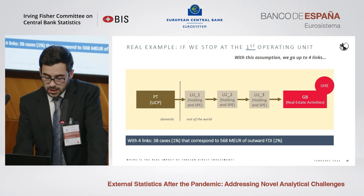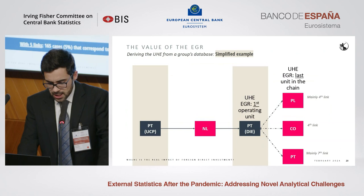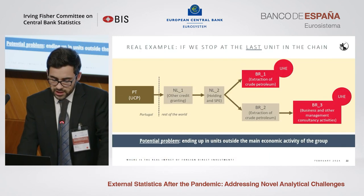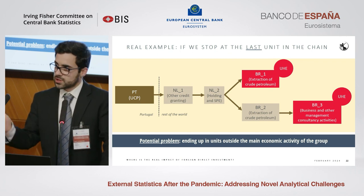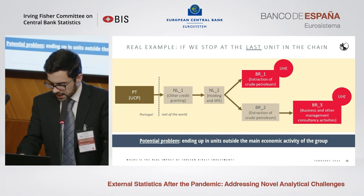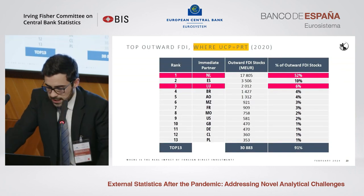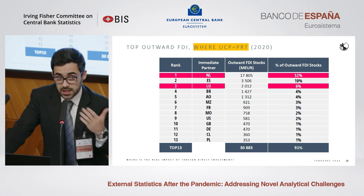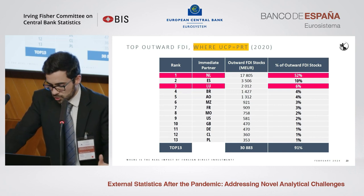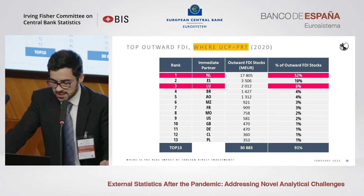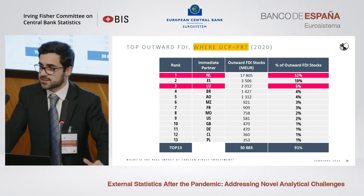In the last unit in investment chain approach, we can see significant amounts of outward FDI positions allocated to the third and fourth link — 12% and 33% respectively. There are concrete examples in the paper where you can see how the different approaches lead to different results both geographically and in terms of economic activity allocation.